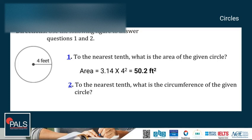The second question is, what is the circumference of the given circle? So the formula for the circumference is 2πr. So plugging in the values, we have 2 × 3.14 for pi × 4, which equals 25.1 feet for the circumference.